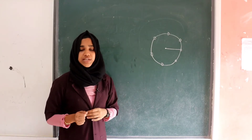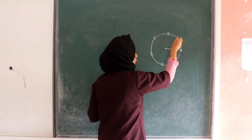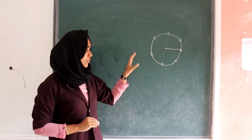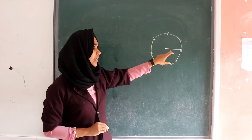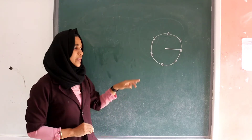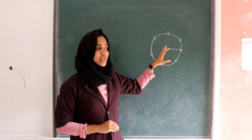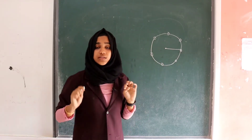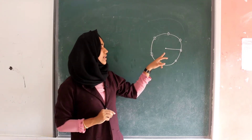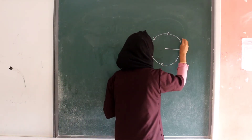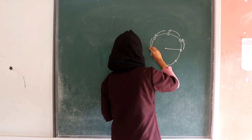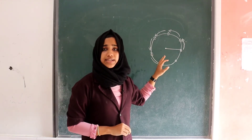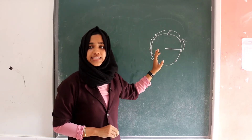Look here — an object is moving in a circular path with uniform speed. The speed of the object is the same throughout. But can you tell me about its velocity? Look at the movement: the direction is changing.